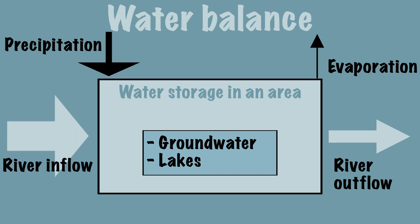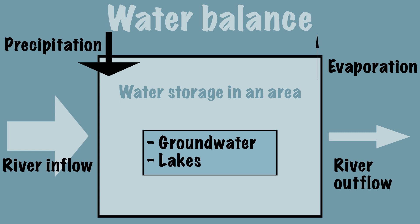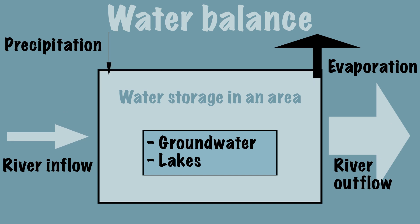If more water is added than is drained away, flooding can occur — for example if it rains very hard. If the outflow exceeds the inflow, a water shortage can occur.